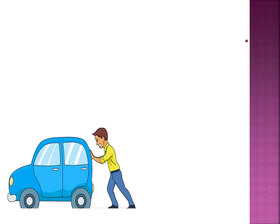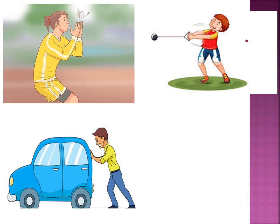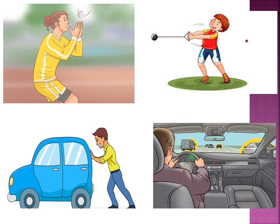The examples are: pushing a stalled vehicle; catching a ball which your friend has thrown towards you; tying a stone to one end of a string and swinging it round and round by the other end; and stopping a moving car by applying brakes. In some of these examples the direction of force and displacement are not the same.